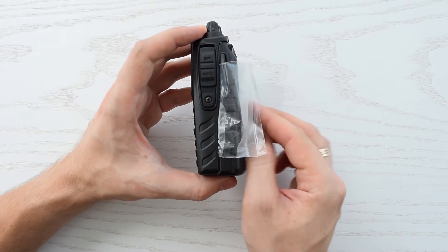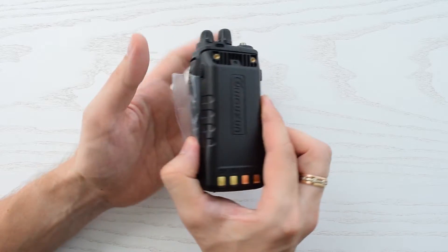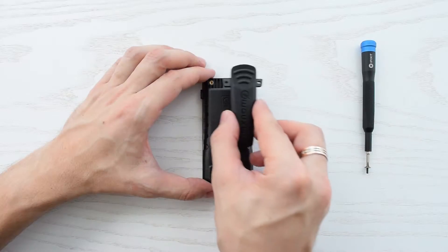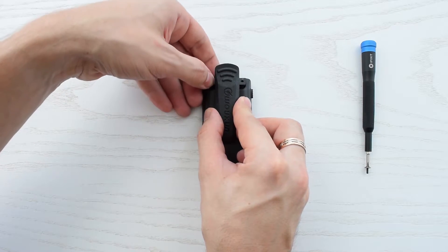And here's the radio itself. It's powered by a large 3200 mAh battery. Let's attach the belt clip to the battery.